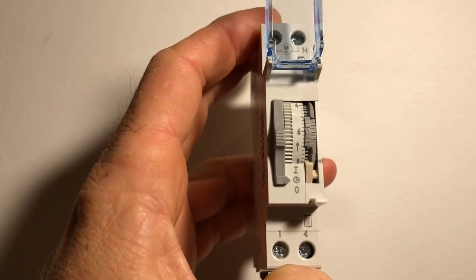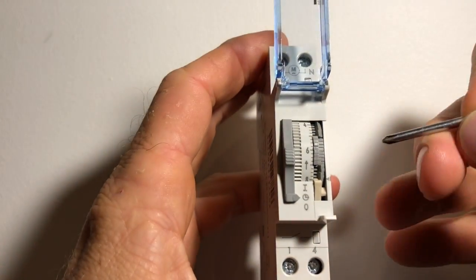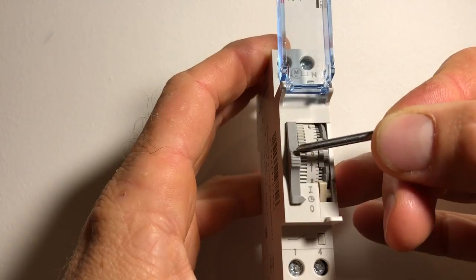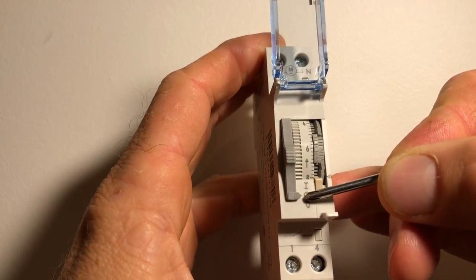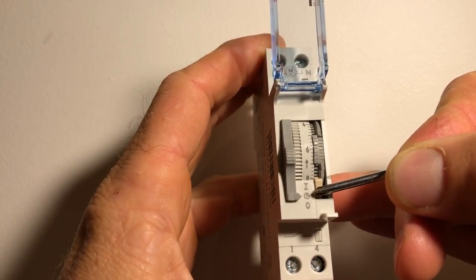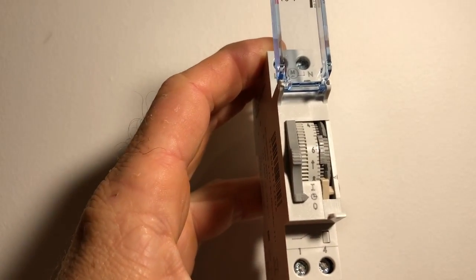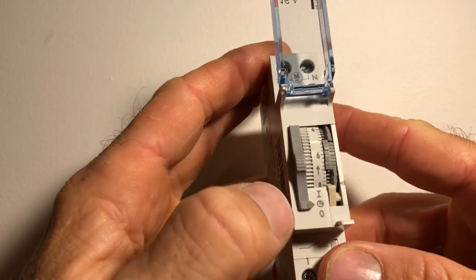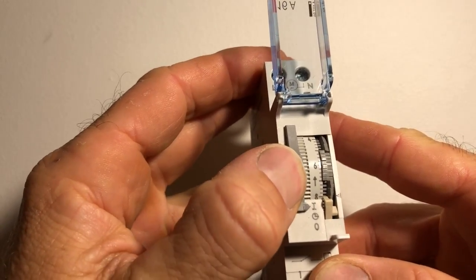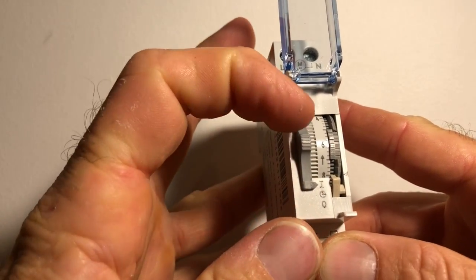So if we have a look here we've got this bar here which has a little arrow down here pointing towards a picture of a clock and we've got an I and an O. So this is a little switch here which switches between the clock up to I which is always on.